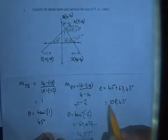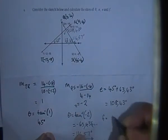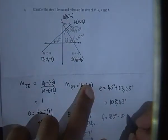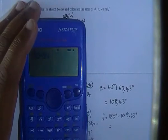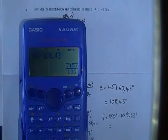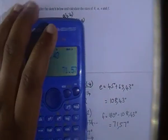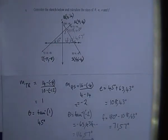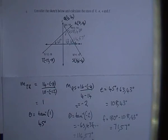To find angle f, since e and f form a straight line (straight angles are 180°): f = 180° - 108.43° = 71.57°. There are exercises on lesson three — please complete them. Send me your answers by email or WhatsApp to let me know you're working on it. Thank you for watching, see you next time.